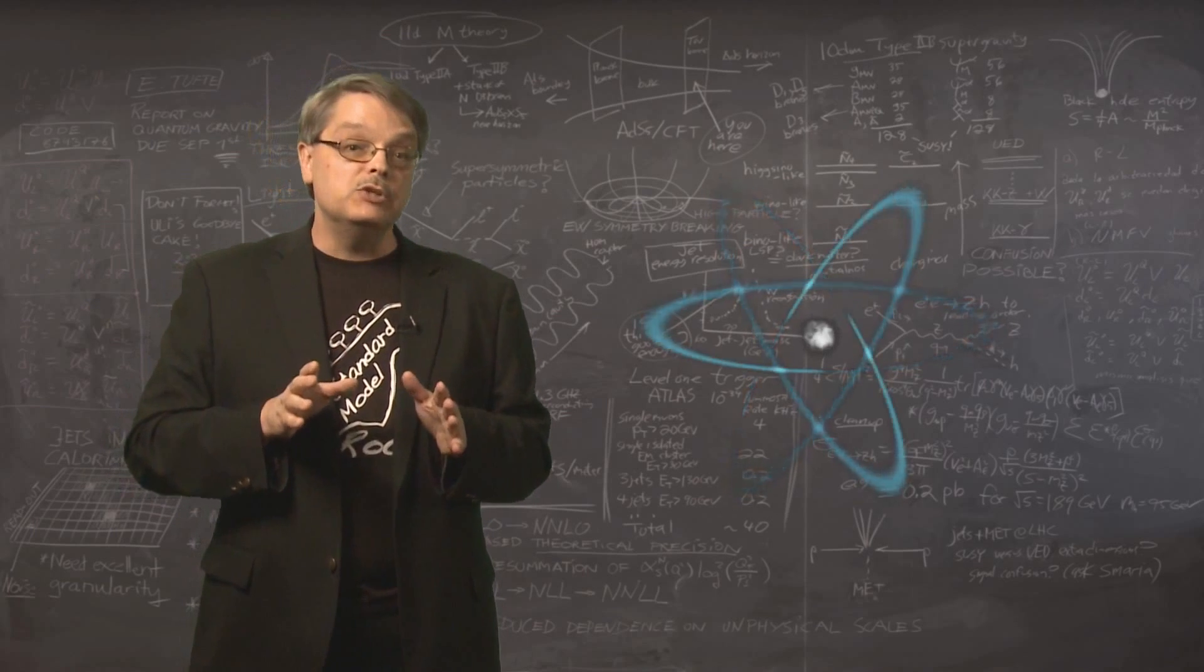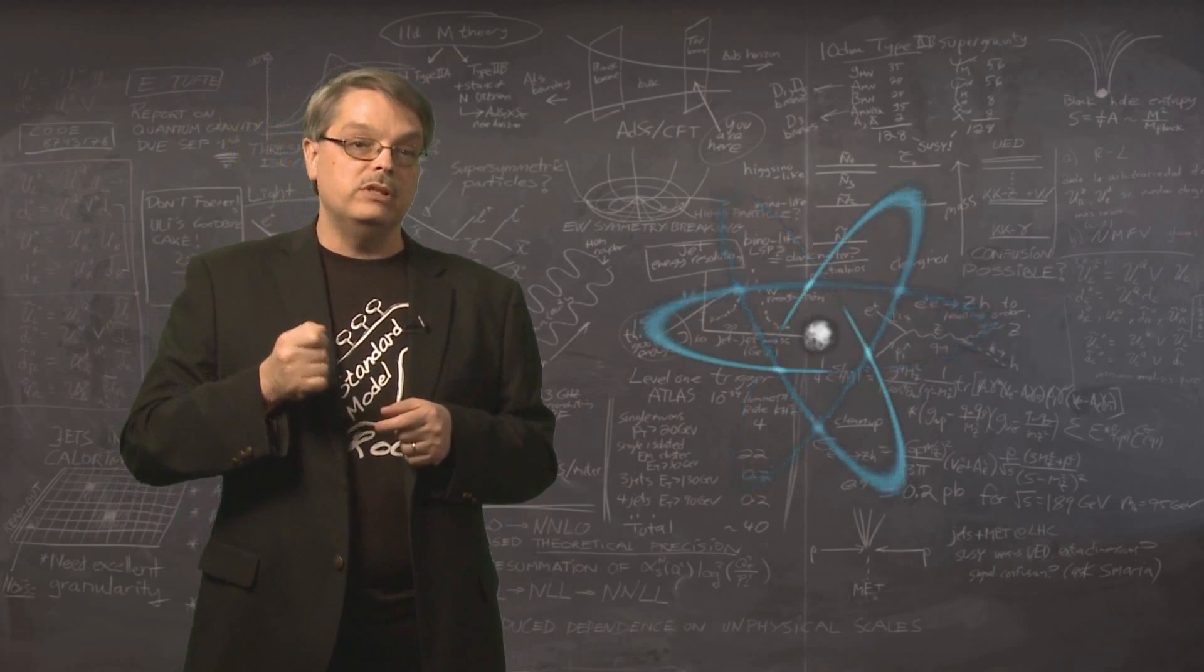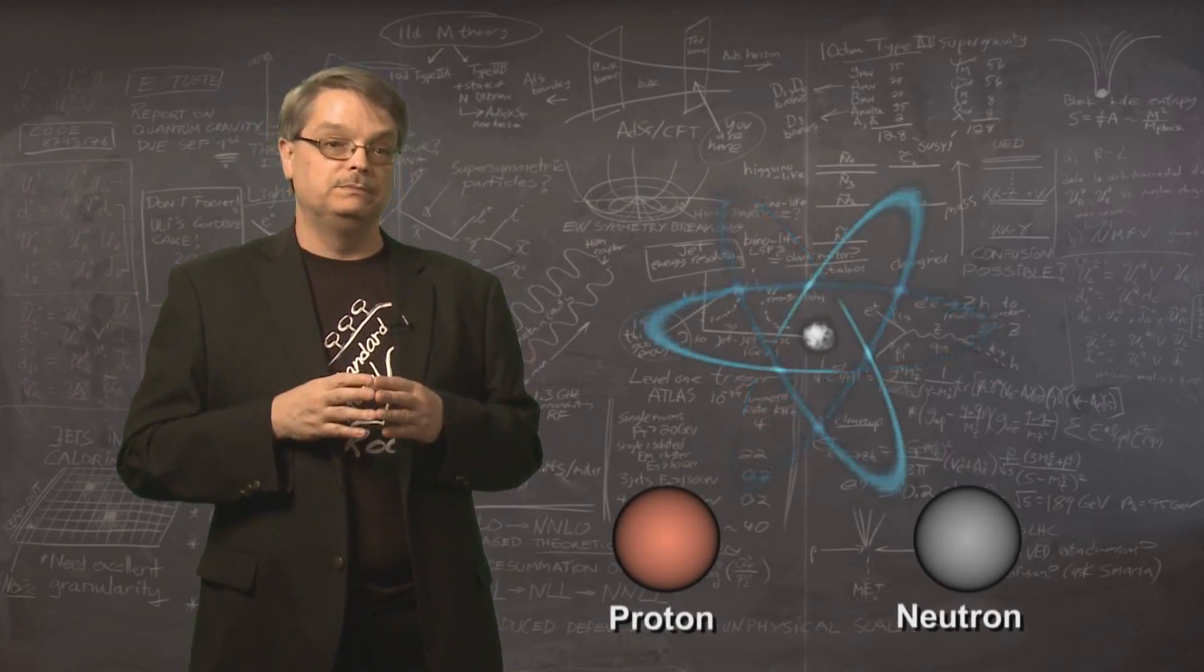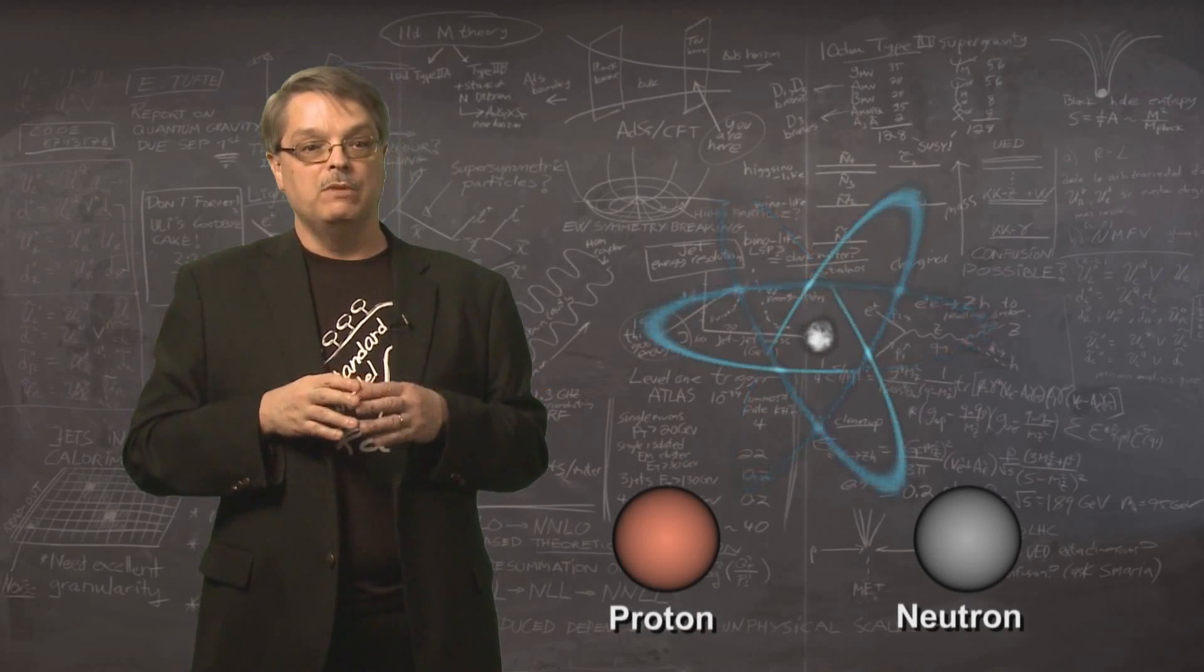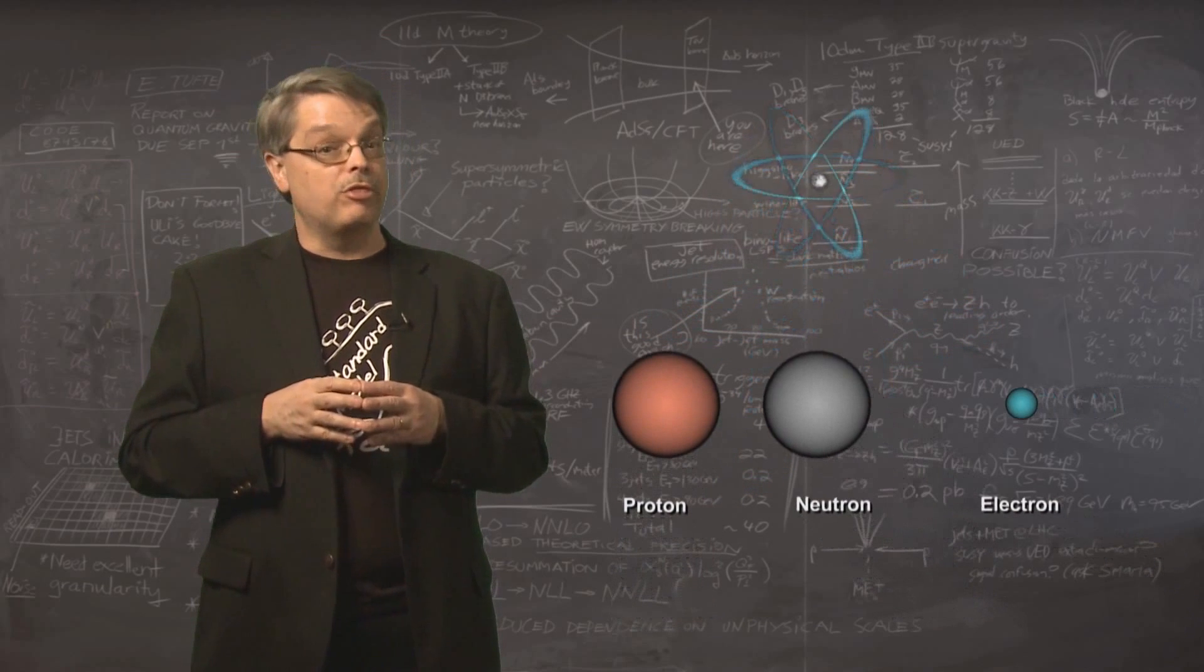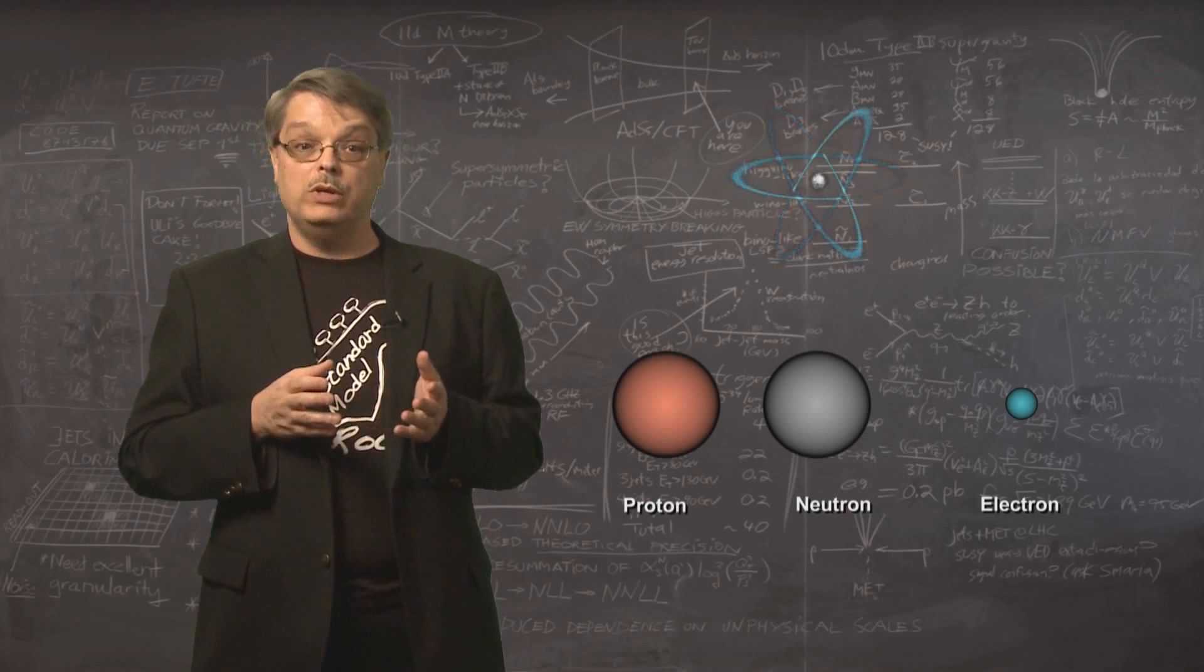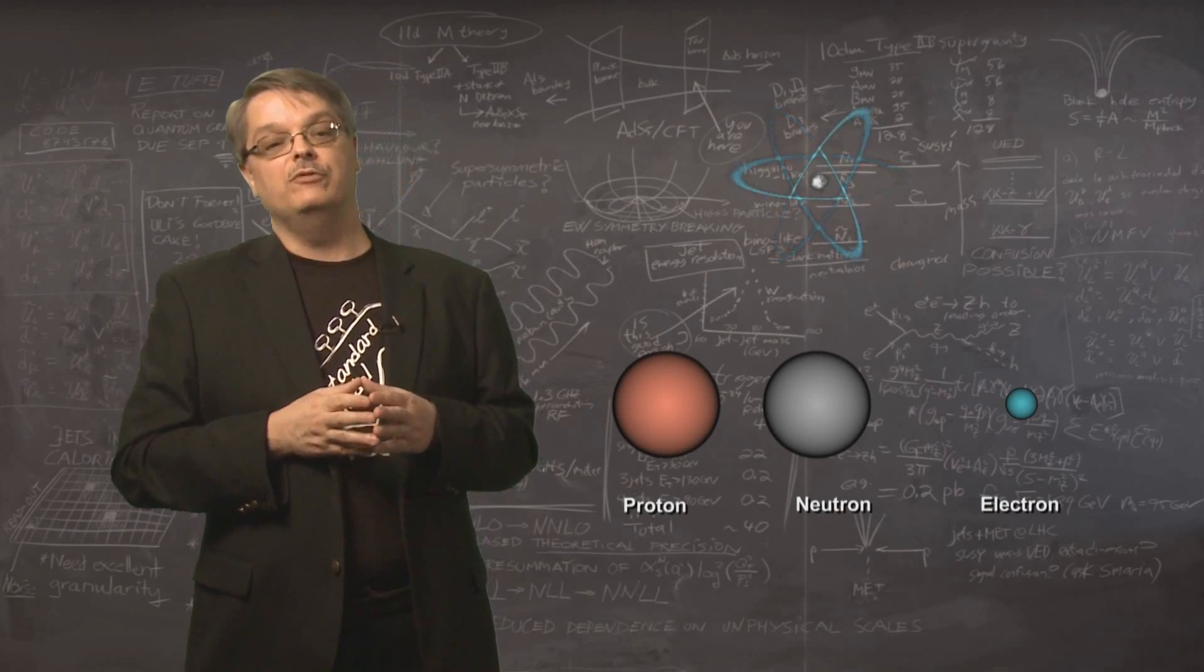However, nearly a century ago, physicists realized that this wasn't the final word. We discovered that the nucleus of the atom was made of varying numbers of two particles called protons and neutrons. This was a substantial simplification in our understanding of the universe. Rather than a hundred chemical elements, we now realized that with a mere three subatomic particles called protons, neutrons, and electrons, we could, in principle at least, construct an entire cosmos. And that is a pretty impressive achievement.